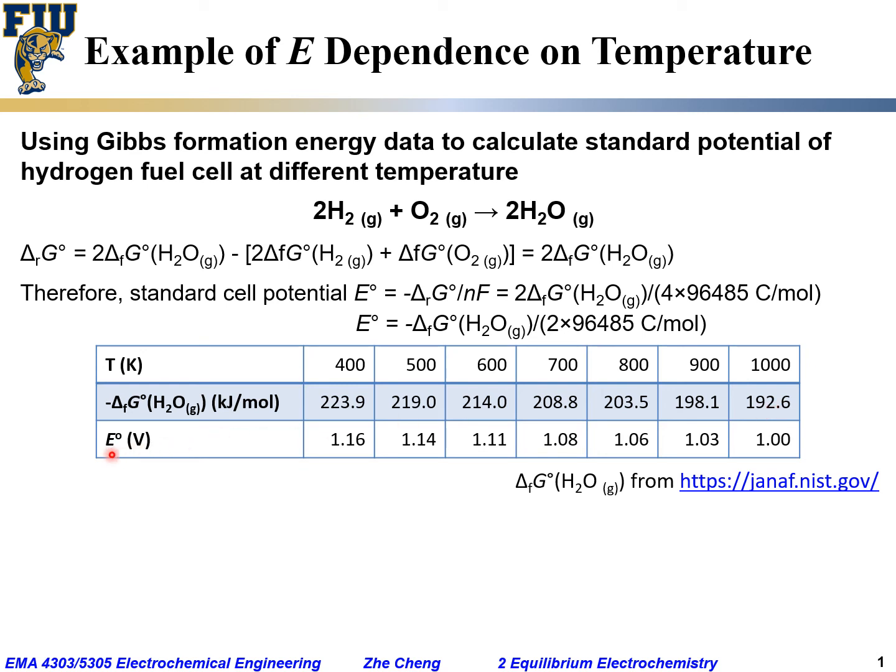The calculated standard cell potential in the standard condition—one atmosphere hydrogen, one atmosphere oxygen, one atmosphere water—would be these different values. You see that the standard cell potential actually decreases with increasing temperature.